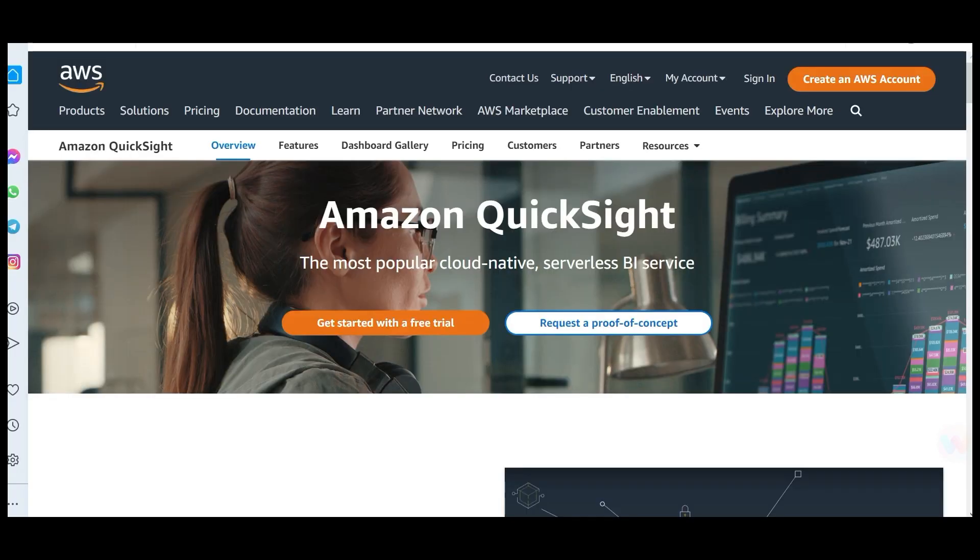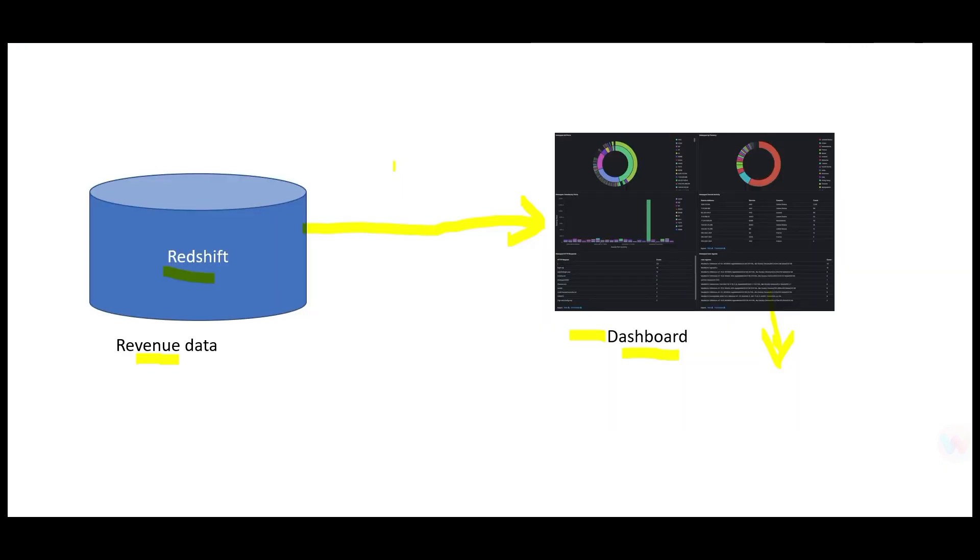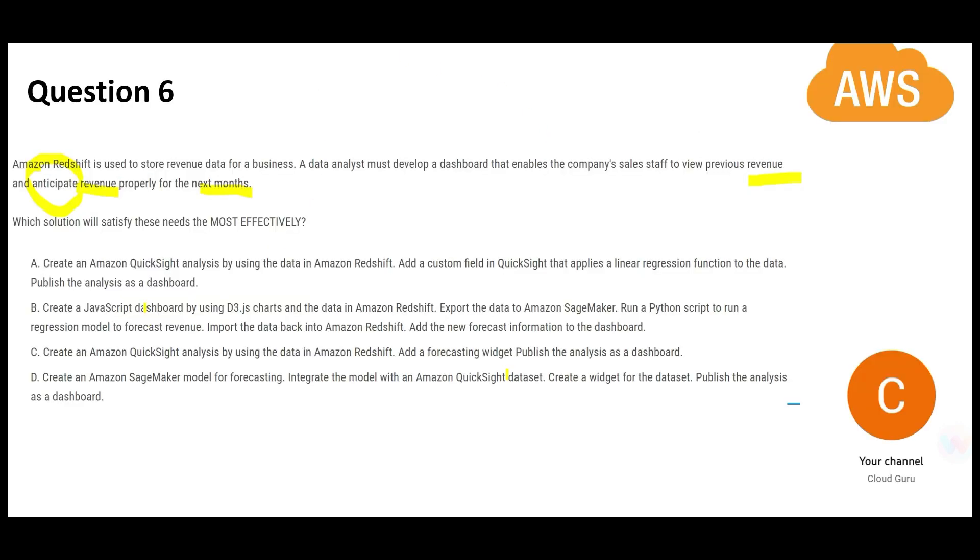One tip to attack such problems: whenever you see dashboard, think of QuickSight. This is a BI tool from AWS similar to Tableau, Cognos, ClickView. We establish this thumb rule—if we see dashboard, we will only think of QuickSight. By that logic, I don't see QuickSight in option B, so this is wrong.